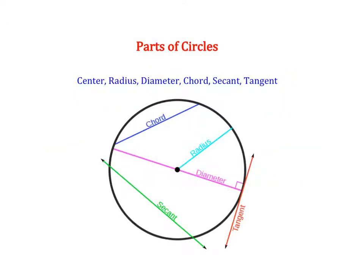There are a few different parts of a circle that I want us to start becoming familiar with. Here you can see a circle, and this dot in the middle is called the center. This is the point that we use to name our circle. One special segment within a circle is called a radius — a line from the center out to the edge of your circle.